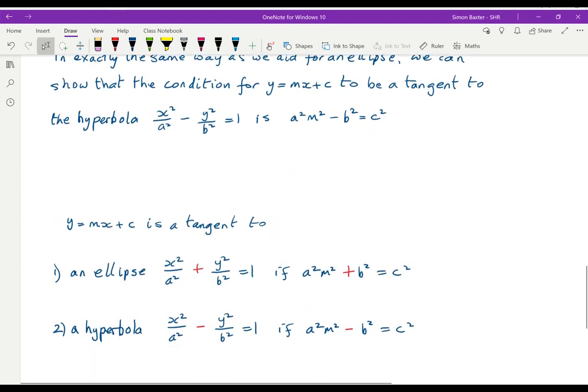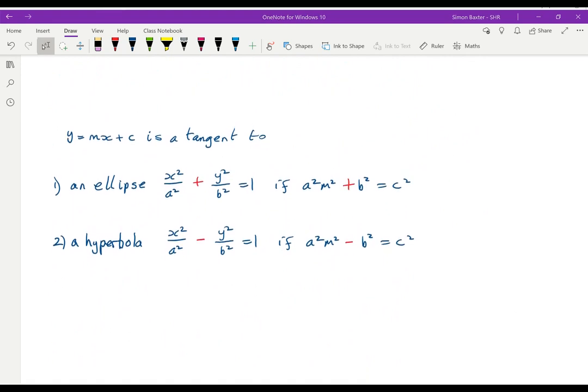This then gives us that if we're going to be a tangent to the ellipse, x²/a² + y²/b² = 1, then the condition is a²m² + b² = c². For the hyperbola, x²/a² - y²/b² = 1, and the condition is a²m² - b² = c².